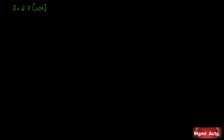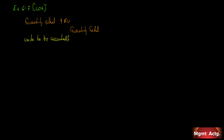We're doing just the quantity schedule and the equivalent units, which is part one of a production report. So let's write that down — our quantity schedule and equivalent units. The first thing we're going to do is the quantity schedule. When we do the quantity schedule, it's units to be accounted for. Our work in process beginning count, which we're told is 25,000, and units added to production that month, which is another 25,000. So we have to account for 50,000 units.